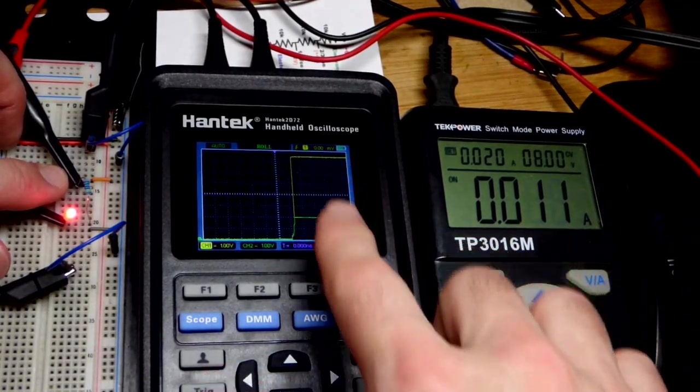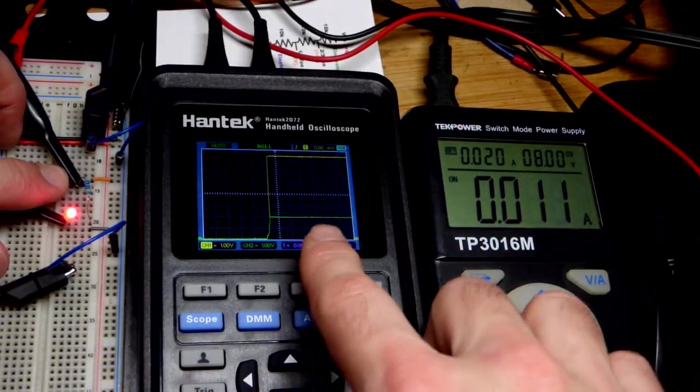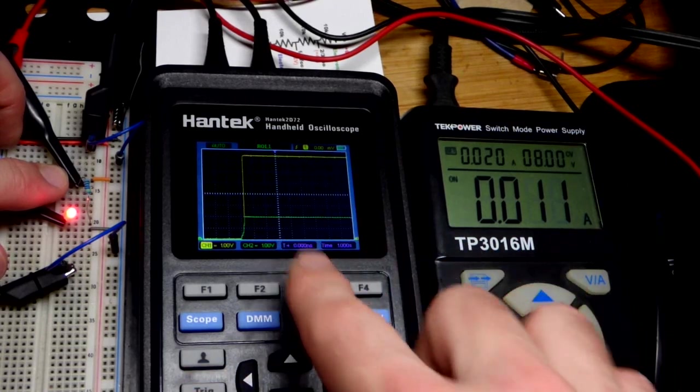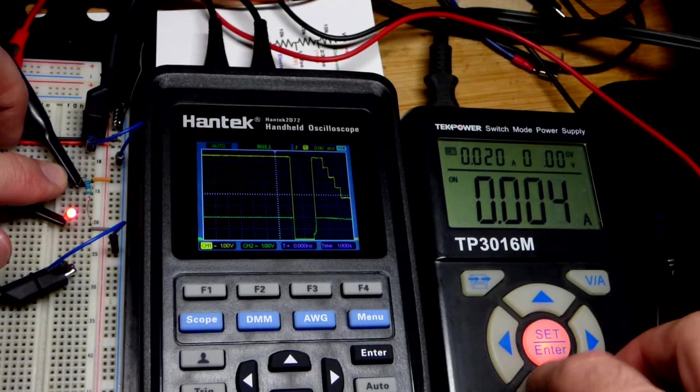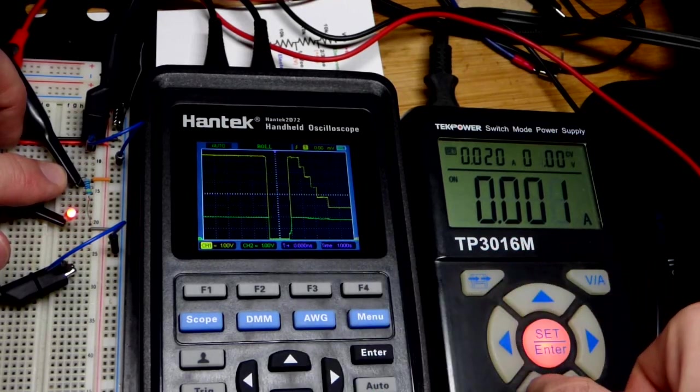There you can see - it's about 11, maybe 12 milliamps. The voltage is the same across the resistor and the LED as before. We can lower the voltage and get the same waveform voltage-wise, just with about twice the current.